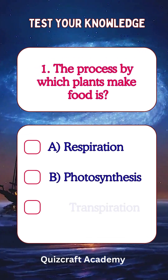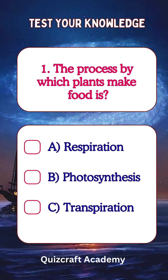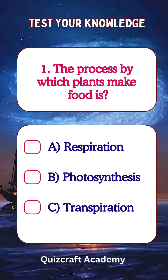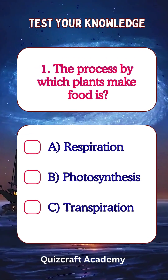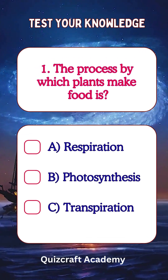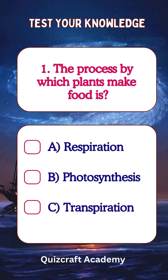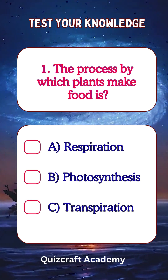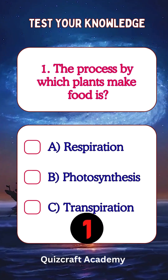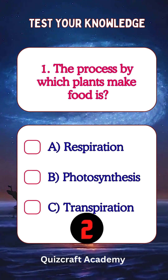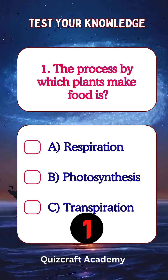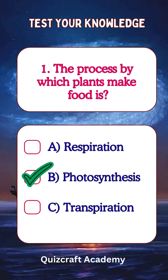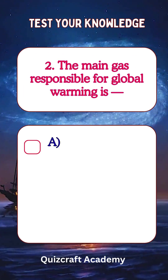The process by which plants make food is: a. respiration, b. photosynthesis, c. transpiration. Answer: photosynthesis.